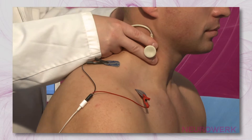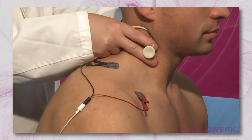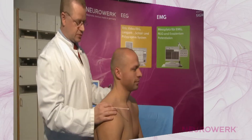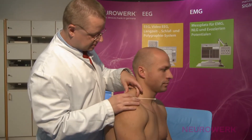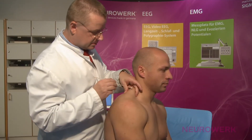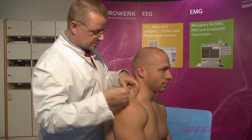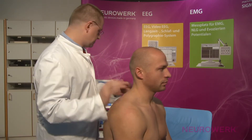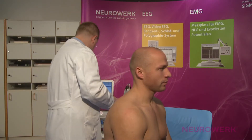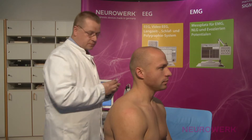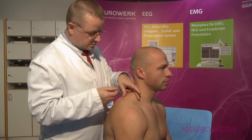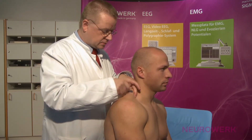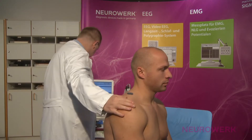The disease begins in the proximal musculature and spreads toward the peripheral. Therefore it is useful to record at both a proximally small and a peripherally large muscle. The active electrode is placed directly on the trapezius muscle, which can be felt when the patient constricts the muscle by pulling his shoulders up. The inactive electrode is placed on the clavicle.